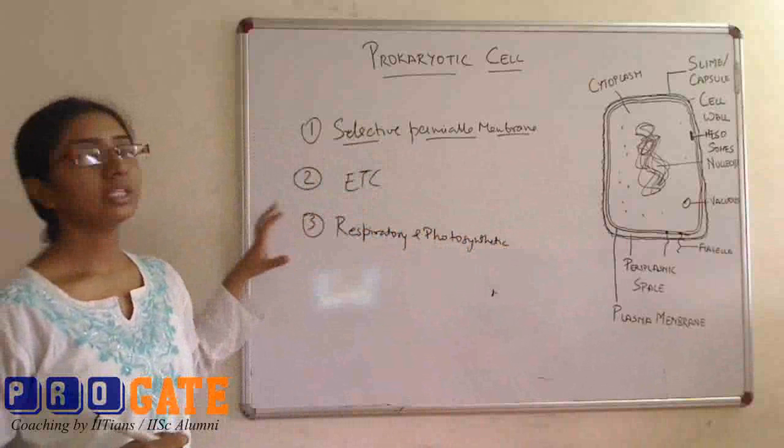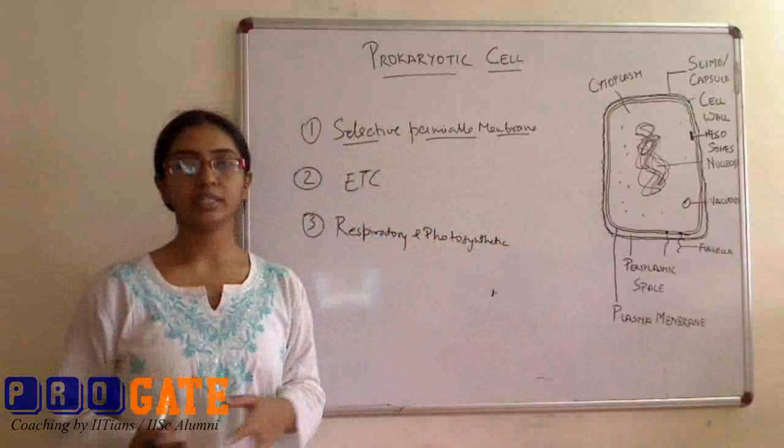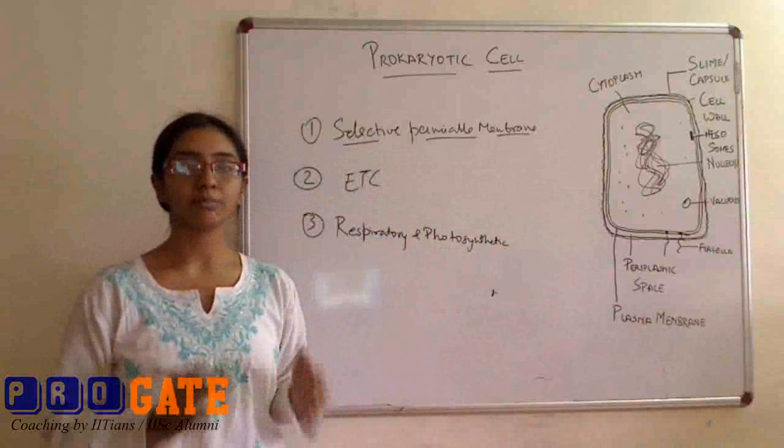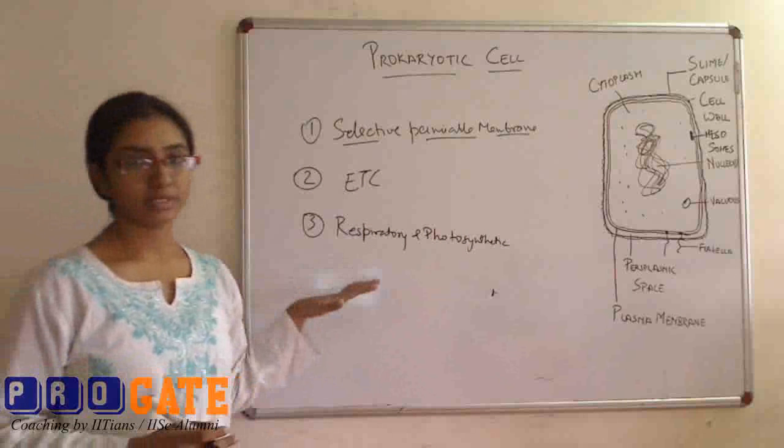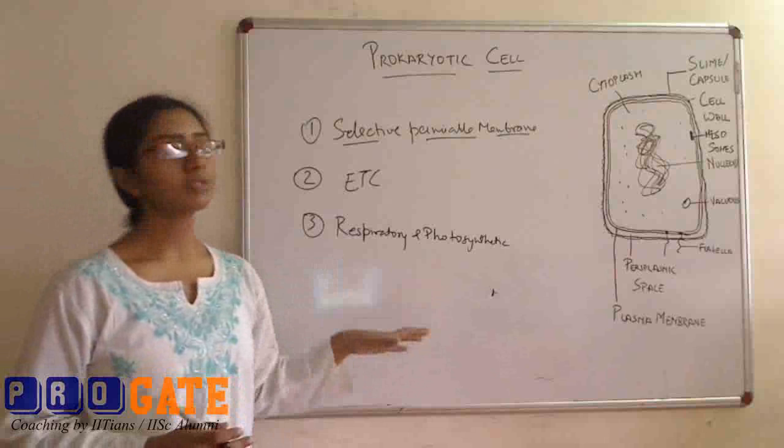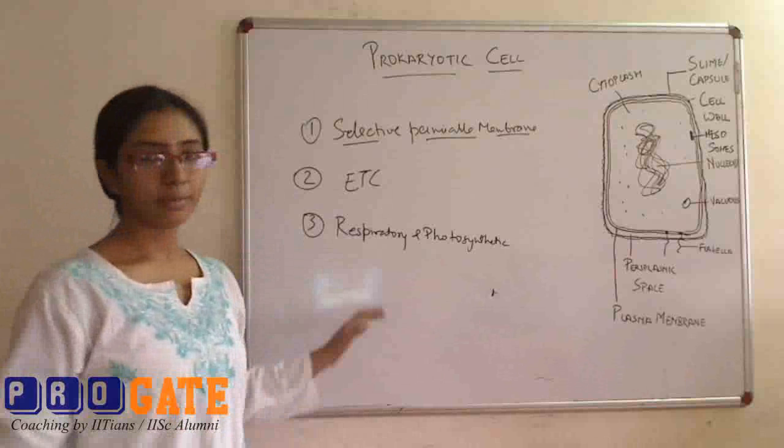Basically all these organelle functions that are present in the eukaryotic cell which are provided by the chloroplast and mitochondria are provided by the plasma membrane itself. Yes, ribosomes are present inside the prokaryotic cell. This is all about plasma membrane.